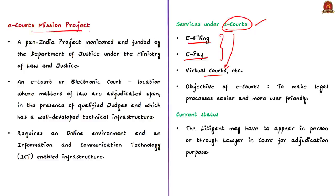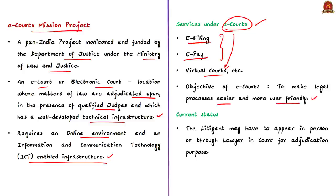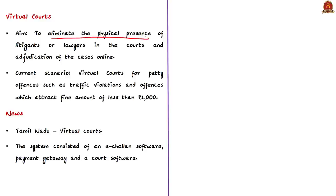The e-court project is a mission mode pan-India project monitored and funded by the Department of Justice under the Ministry of Law and Justice. An e-court or electronic court means a location where matters of law are adjudicated in the presence of qualified judges, with a well-developed technical infrastructure requiring an online and ICT-enabled environment. They aim to make legal processes easier and user friendly, but for adjudication purposes the litigant may have to appear in person or through a lawyer — physical presence is necessary in an e-court. Virtual court, however, aims at eliminating the physical presence of litigants or lawyers in the court, with adjudication of cases going fully online.